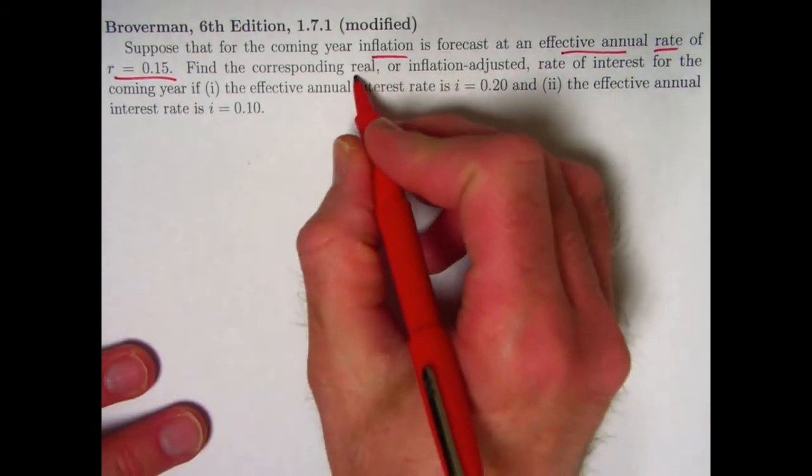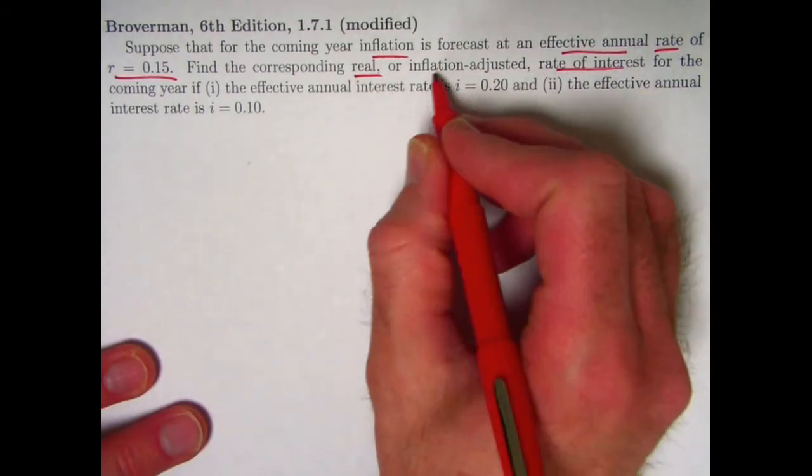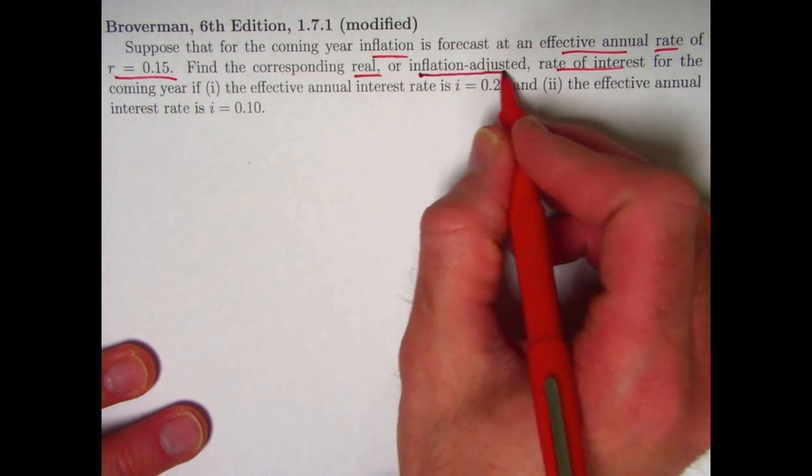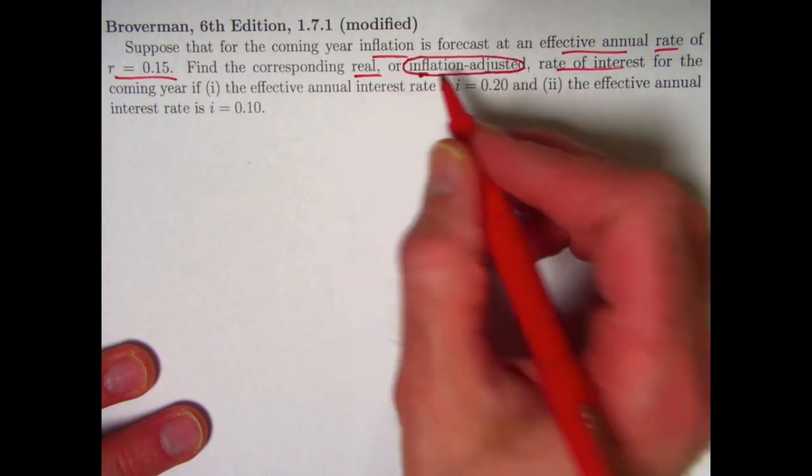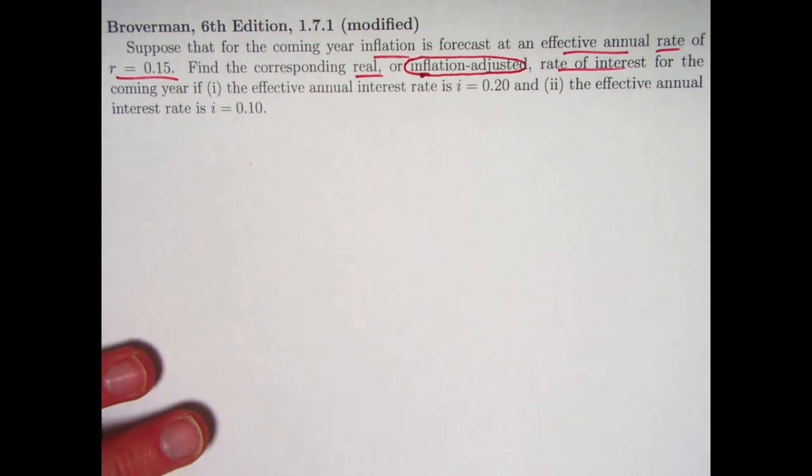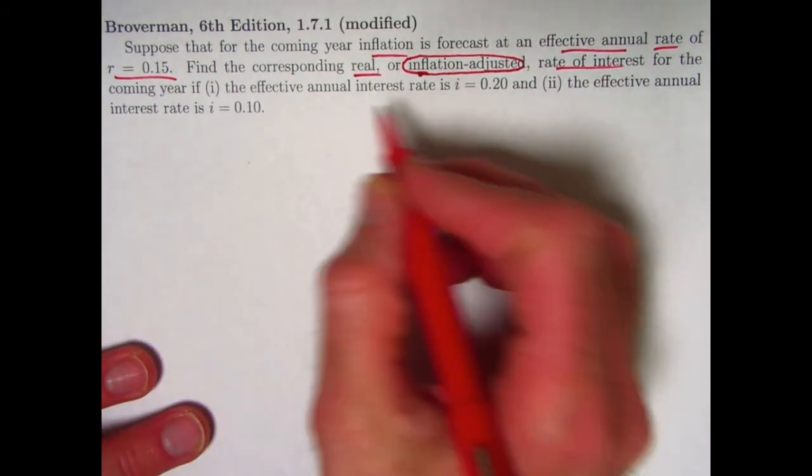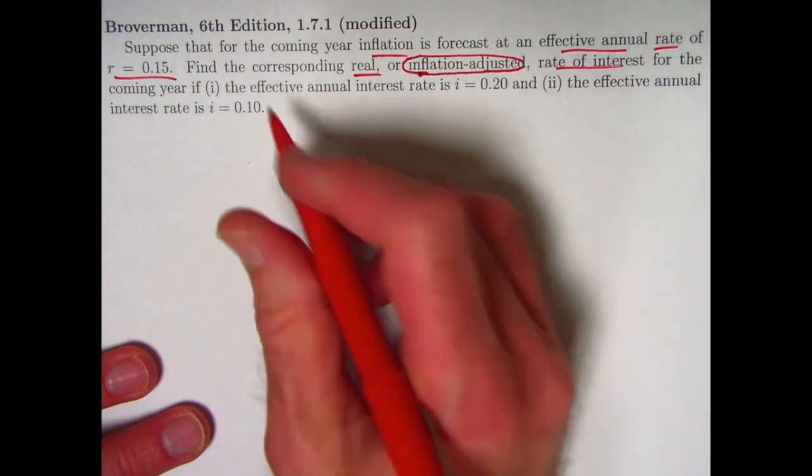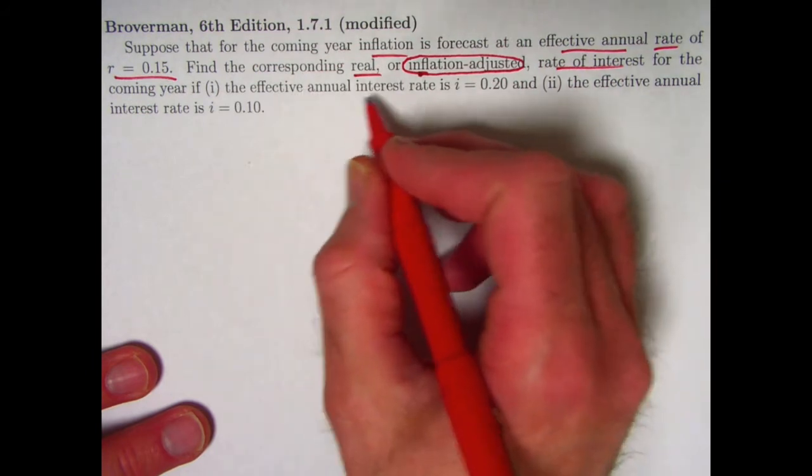We're gonna find the corresponding real rate of interest. Whenever you hear the word real in terms of inflation, it means inflation adjusted. We are gonna take inflation into account. For the coming year, in two cases, it's only the second case that's actually in the book, but I wanted to do this other case as well.